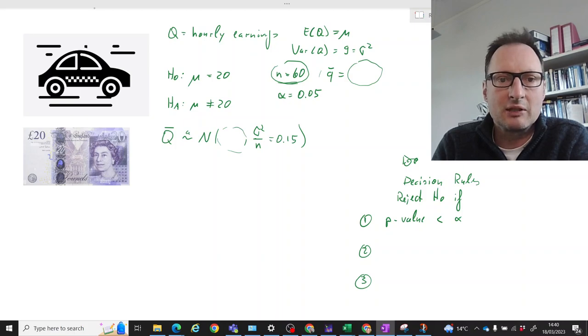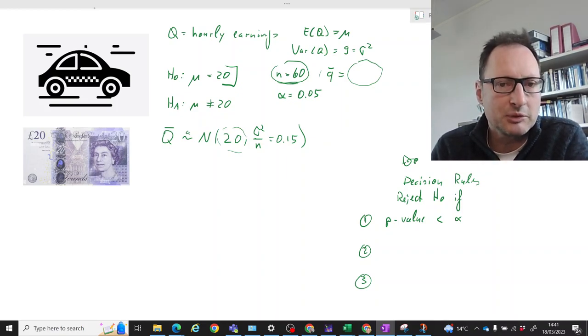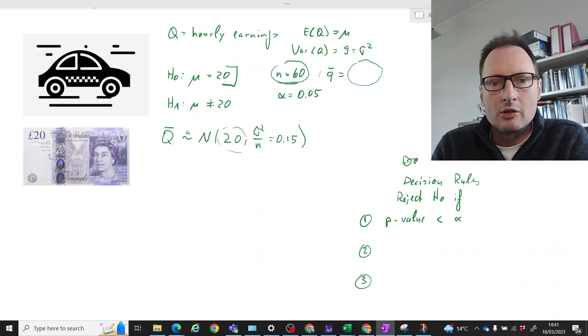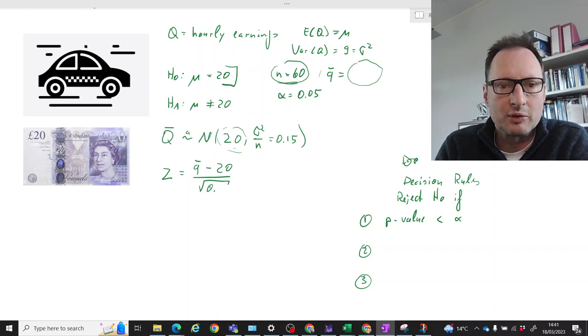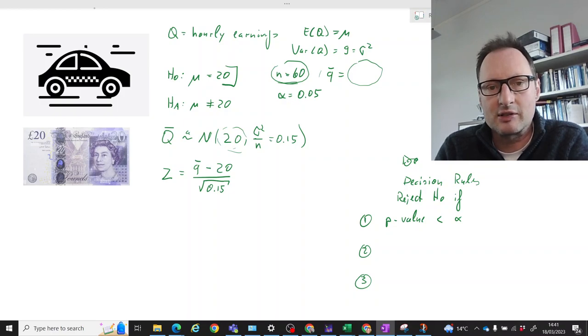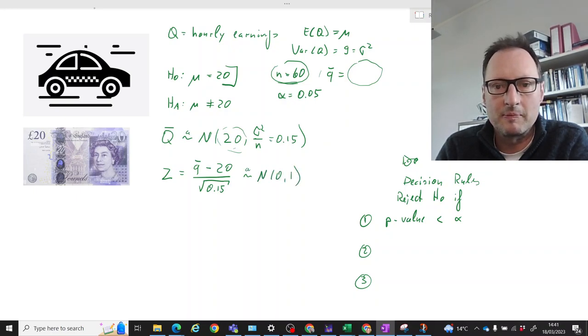What about the expected value for Q-bar? Well we take our hypothesized value of 20. So all the following calculations are conditional on this null hypothesis being true. So if we have a normally distributed random variable, we can standardize our sample mean by Q-bar minus that 20 divided by the standard error, which is going to be the square root of 0.15. So that's our test statistic. That one here is going to be approximately standard normally distributed.